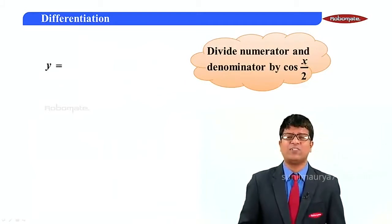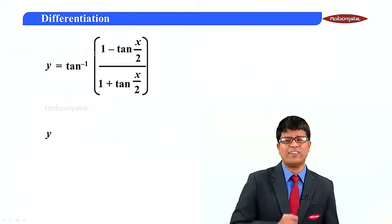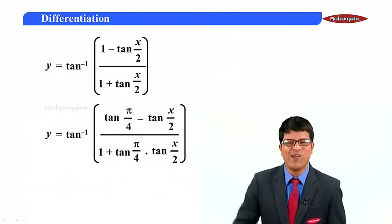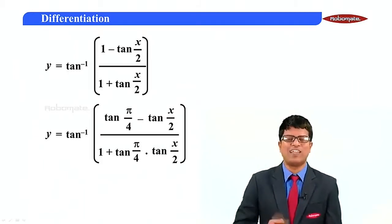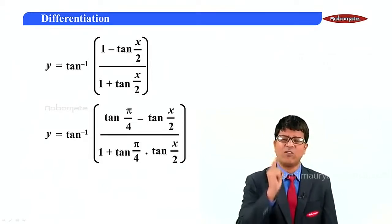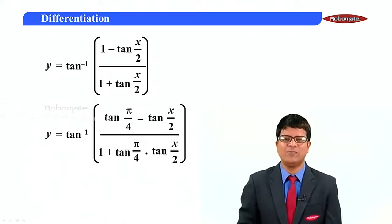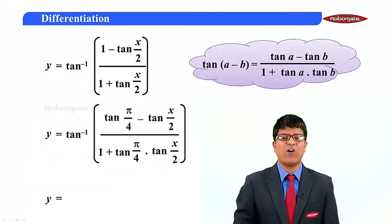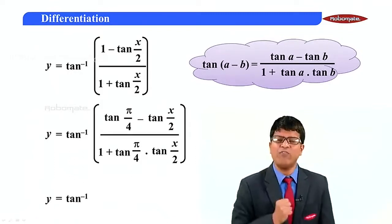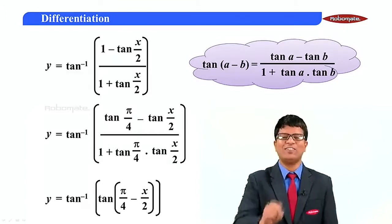The problem converts to tan inverse of (1 − tan(x/2)) upon (1 + tan(x/2)). Writing 1 as tan(π/4), this becomes tan inverse of (tan(π/4) − tan(x/2)) upon (1 + tan(π/4)·tan(x/2)). Using the formula tan(a − b) = (tan a − tan b)/(1 + tan a tan b), we get y equal to tan inverse of tan(π/4 − x/2), which equals π/4 minus x/2.